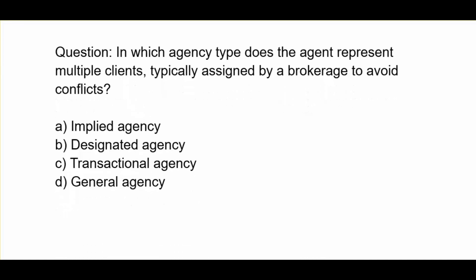In which agency type does the agent represent multiple clients, typically assigned by a brokerage to avoid conflicts? A. Implied agency. B. Designated agency. C. Transactional agency. D. General agency.